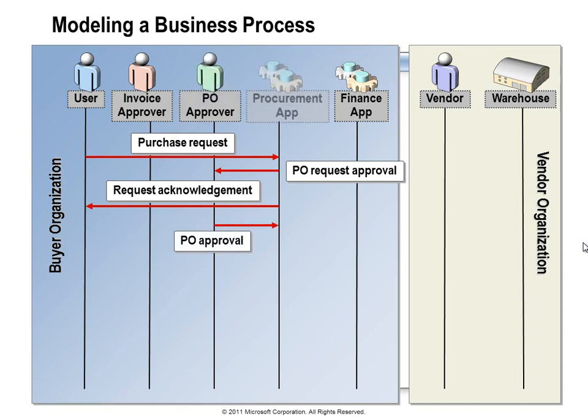Eventually the manager logs in and approves the order. Imagine if the manager could have approved the request by simply responding to the email from the procurement system — this could help things move through a lot faster. Imagine also if the procurement system could handle more complex business logic and evaluate the purchase request against a more complete set of business rules, so maybe this purchase wouldn't have required human intervention.